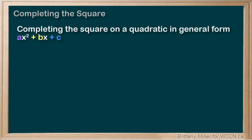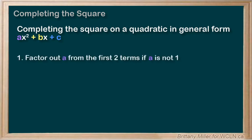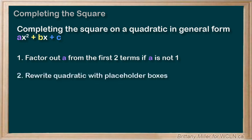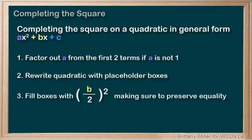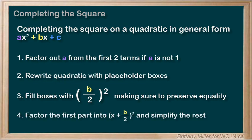To recap, here are our steps for completing the square. If a is not 1, then you need to take a out of the first two terms of the quadratic and proceed from there. Then we rewrite our equation with the placeholder boxes. We fill those boxes with b over 2 squared, and then we factor the first part of the quadratic into x plus b over 2 squared, and simplify the rest.